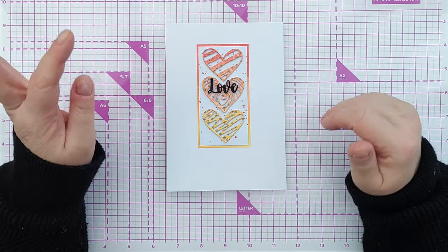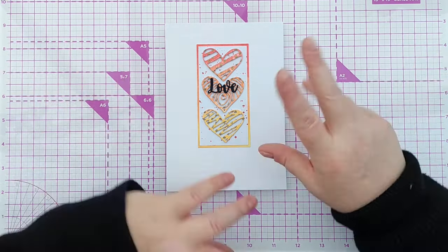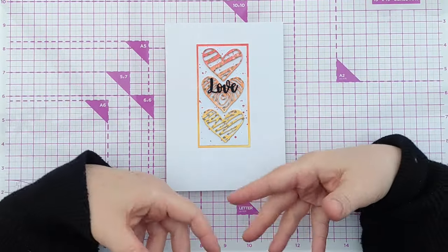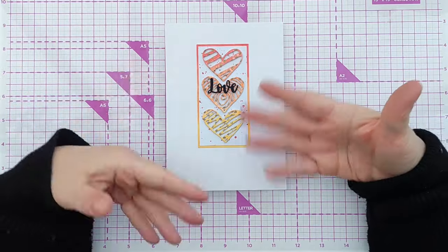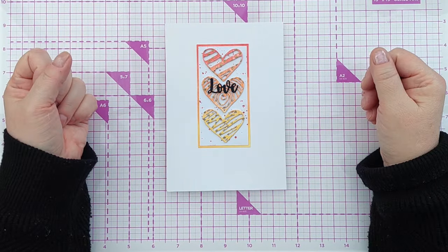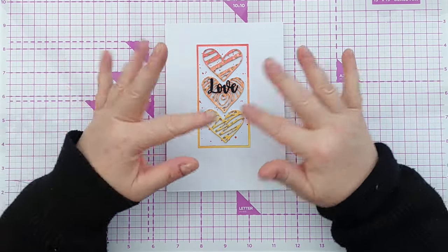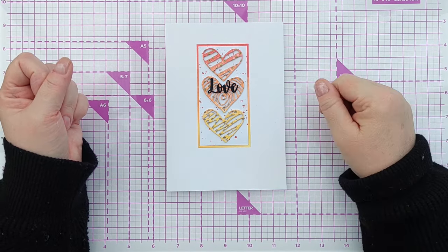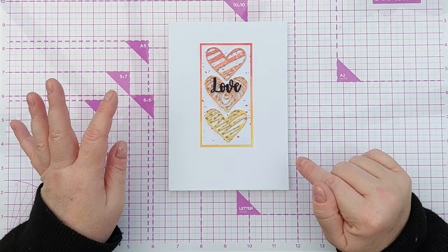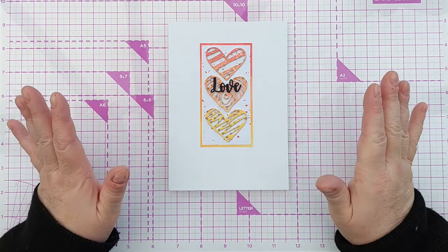I tend to think of hearts and love as a warm thing so I tend to gravitate towards the pinks, the reds, the oranges and the yellows, but I think it could also work with a cool color scheme. The card is 5 by 7 inches made from hammered white cardstock.